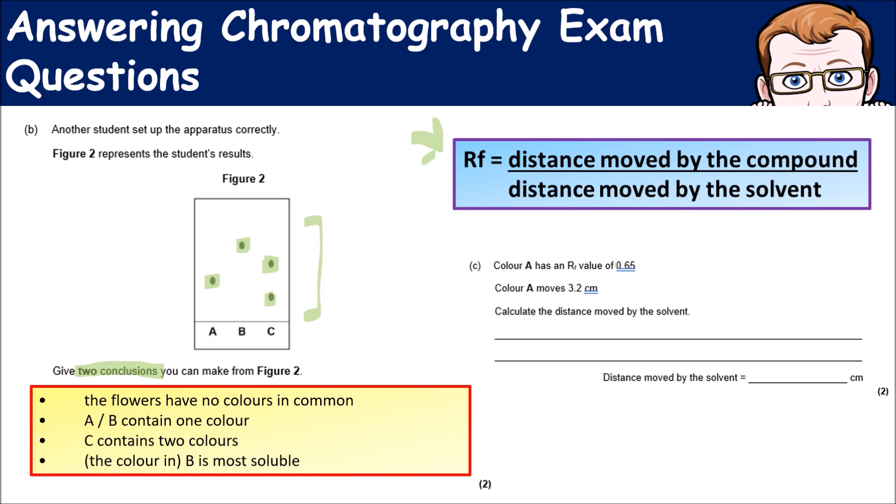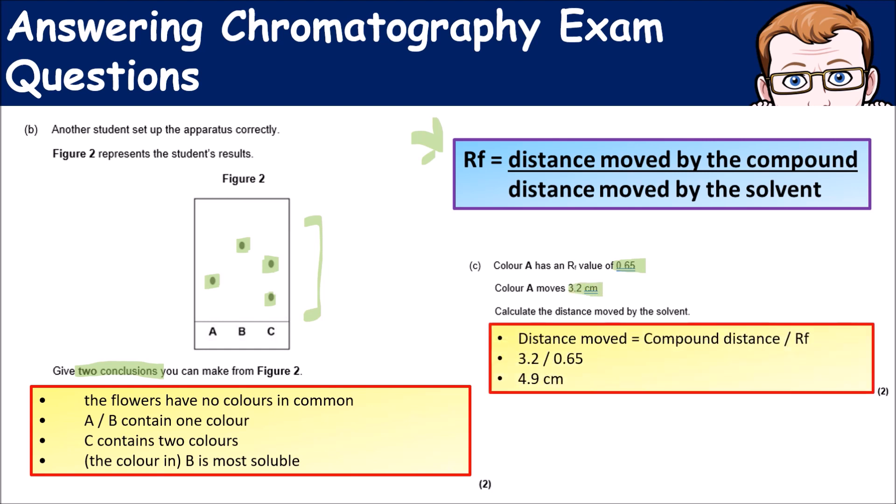The way you would do this: rearrange your equation so the distance moved by the solvent equals the component distance divided by the Rf. That'll be 3.2 divided by 0.15.